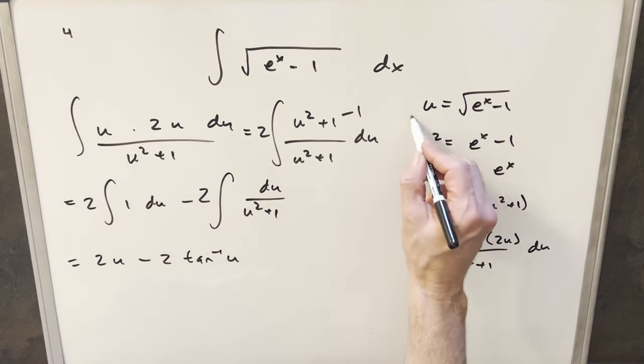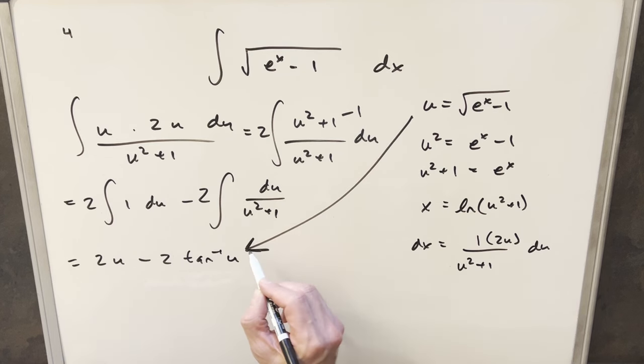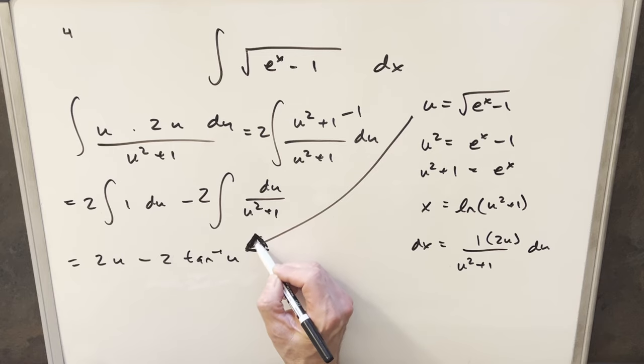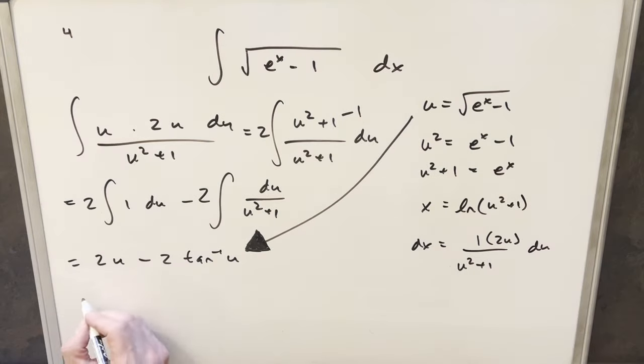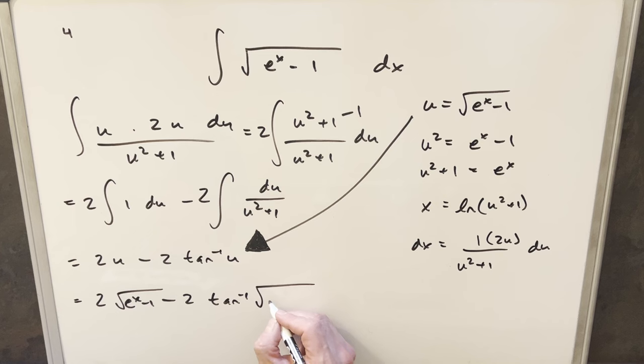And so to finish it, we just need to back substitute right here. So putting it all together, now we're going to have two square root of e to the x minus one minus two arctan of our u, which is just going to be square root of e to the x minus one. Put a plus c on there, and that's it.